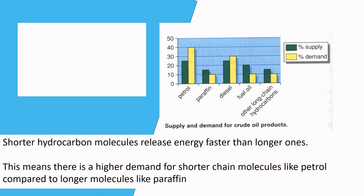Because of this they're more useful. You can see from the graph that the demand for short chain hydrocarbons like petrol with seven to nine carbons is higher than the supply, with longer molecules like fuel oil with 20 to 27 carbons.